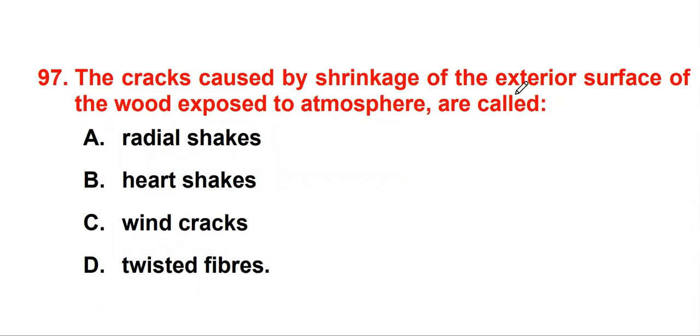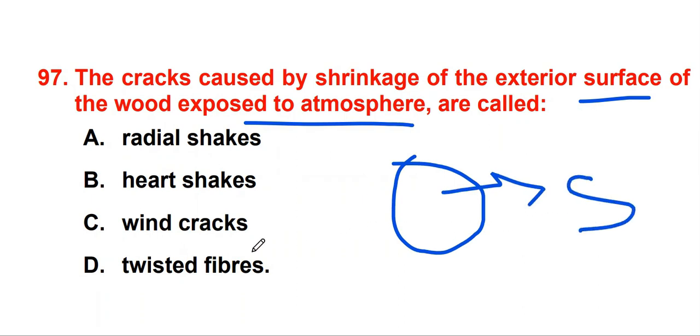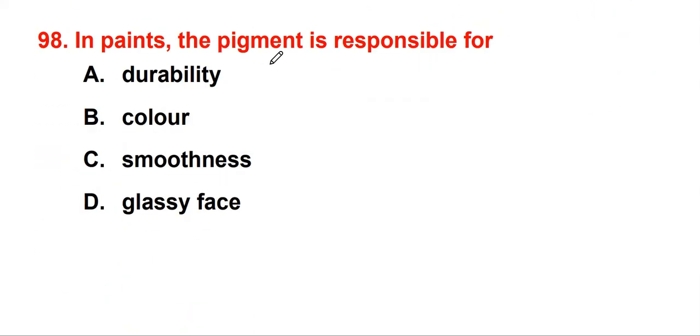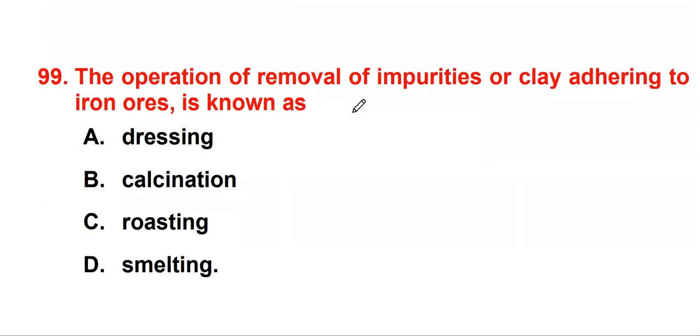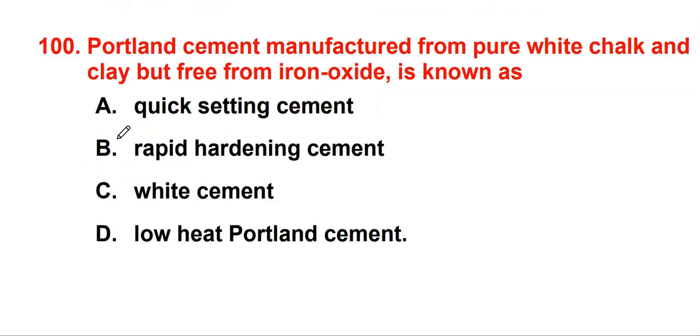The cracks caused by shrinkage of exterior surface of the wood exposed to atmosphere are called wind cracks. If wood is directly exposed to surface, obviously due to winds cracks will form. In paints, pigment is responsible for color. The operation of removal of impurities or clay adhering to iron ores is known as dressing. Last question: Portland cement manufactured from pure white chalk and clay but free from iron oxide is known as white cement.